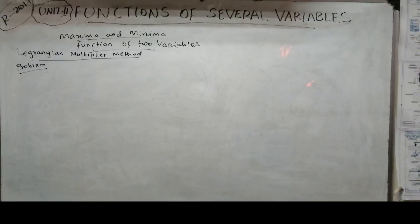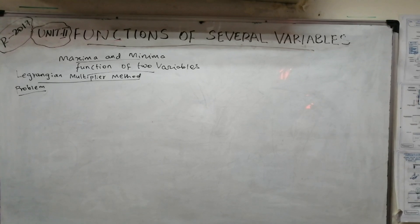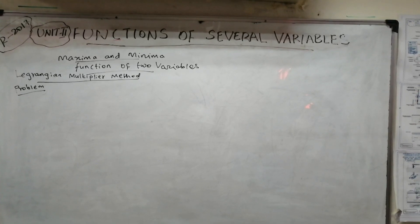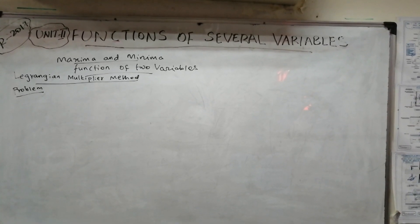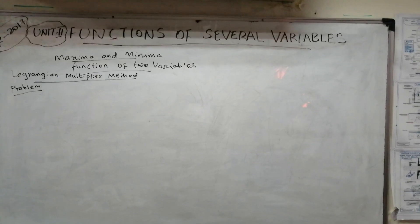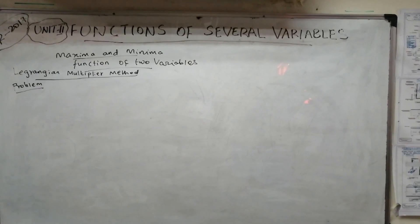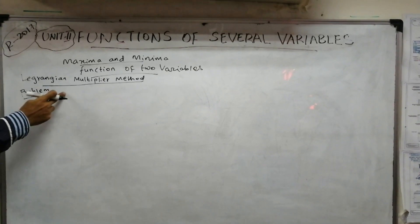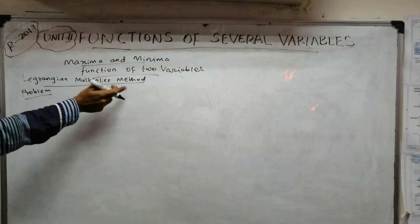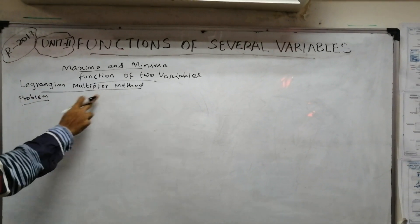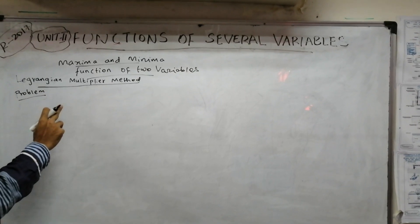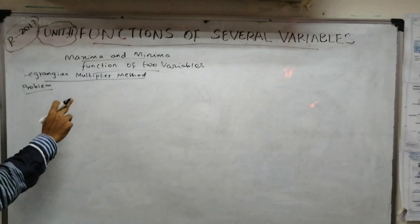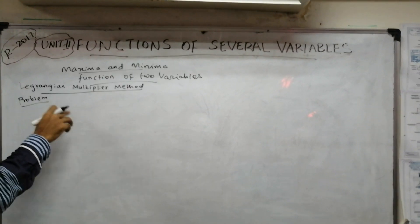Welcome to SK Max Tutorial Class. In our class, we cover Maximum and Minimum Function of Two Variables. The second method is the Lagrangian Multiplier method. If you already have a problem, you will see the link in the description.